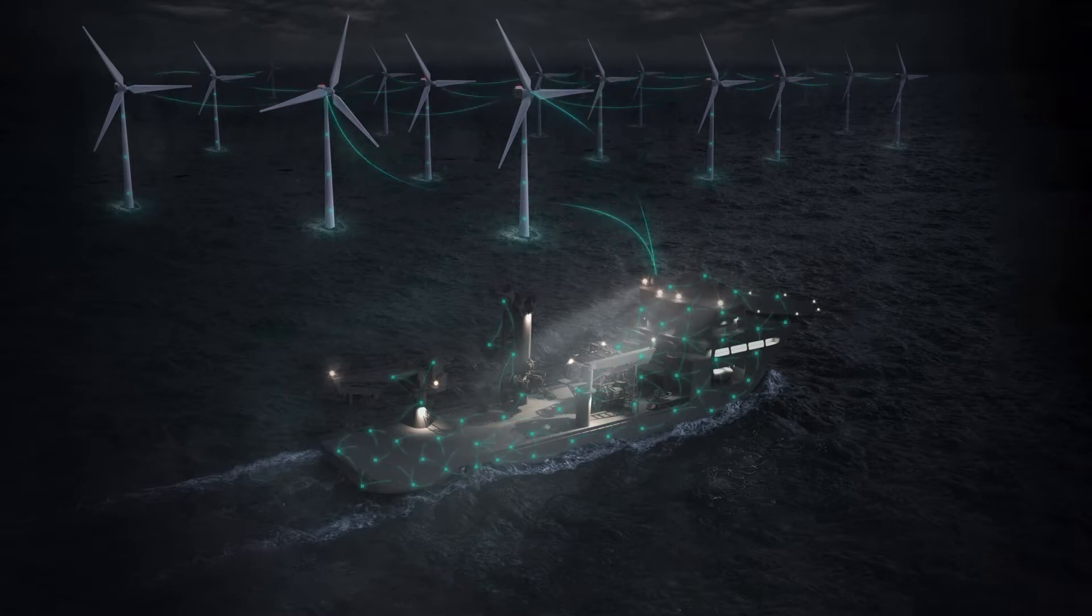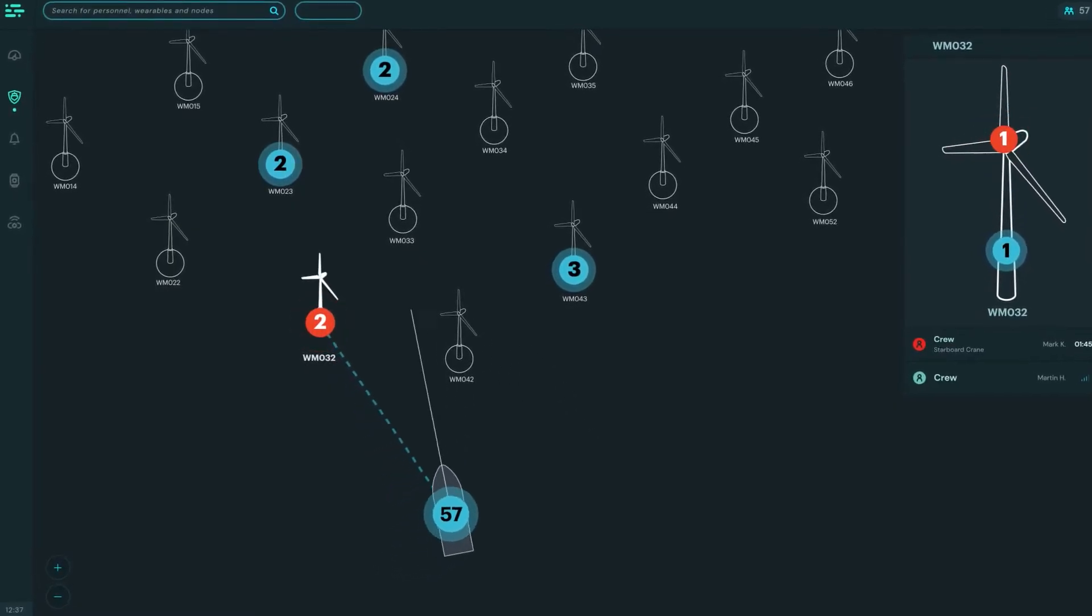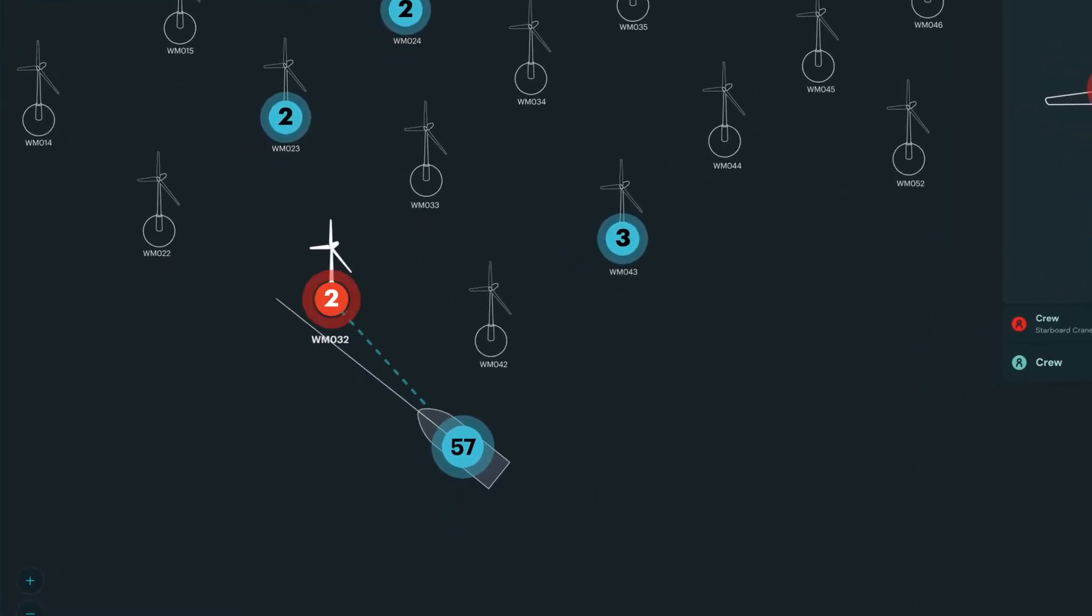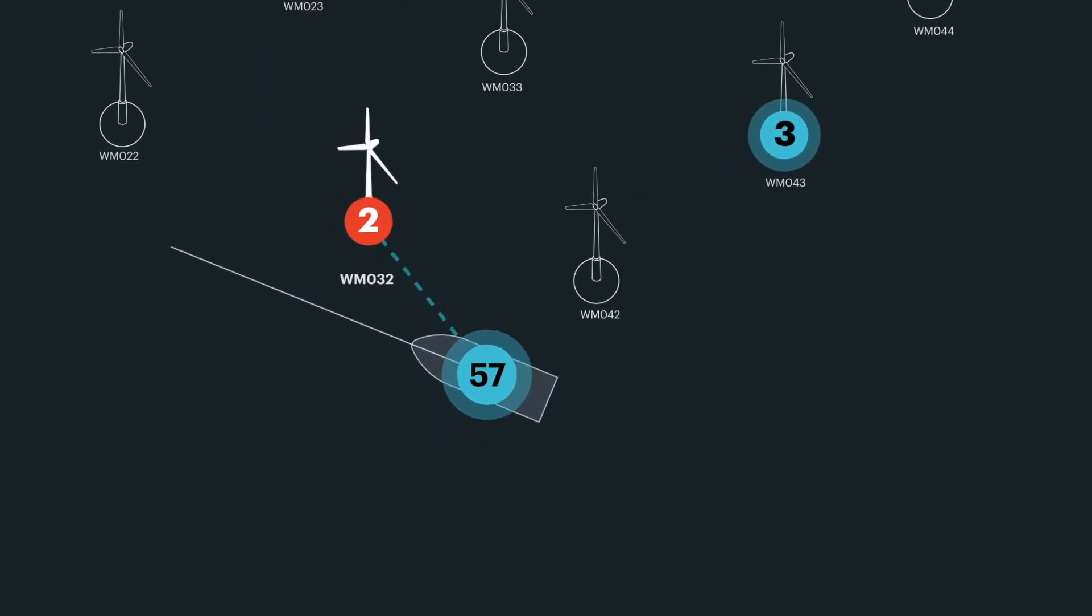Connect POB Wind provides a fully automated and real-time overview of personnel on board the ship, as well as those deployed in the wind farm. This enables instant localization and status overview of people both onboard and within each windmill.